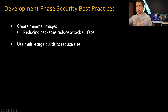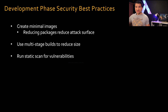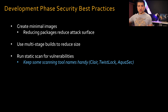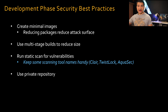The next security best practice is to run static scans on the container image for vulnerabilities. Keep some scanning tool names handy for interviews — for example, if you are using ECR (Amazon's container repository), it uses Clair free of charge, or you can use Twistlock, Aquasec, etc. Also, the next best practice is to use a private repository instead of a public one.